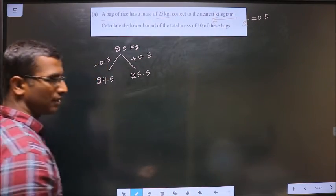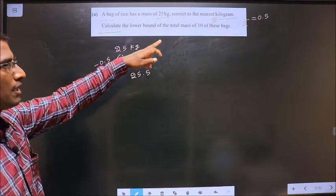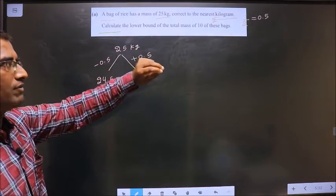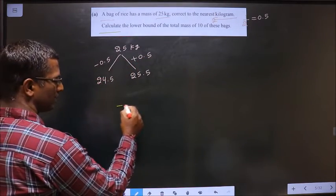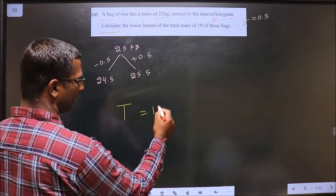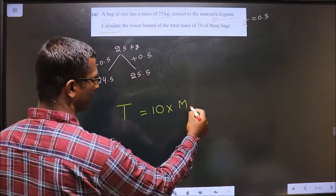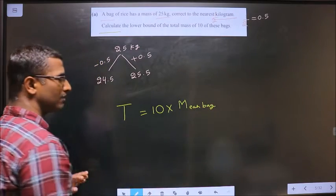Let us continue the question now. Calculate the lower bound of the total mass of 10 of these bags. See, total mass of 10 of these bags will be 10 times the mass of each bag. Clear with that?